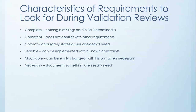The next characteristic is that it has to be necessary — documenting something the users really need. You don't want to fall into the trap of gold plating, whether it's user gold plating or developer gold plating. Gold plating is when you're adding in extra things based on your likes or nice-to-haves that obscure the main thing you should be building. The next thing is to make sure requirements are prioritized — rank them by importance of inclusion in your product.